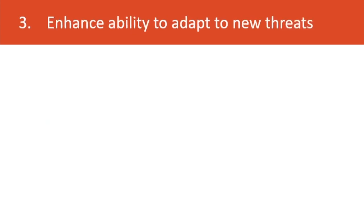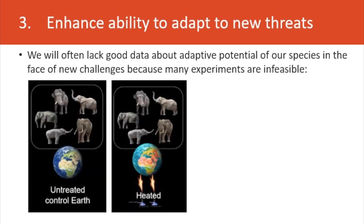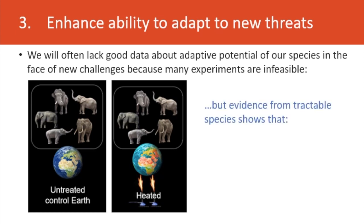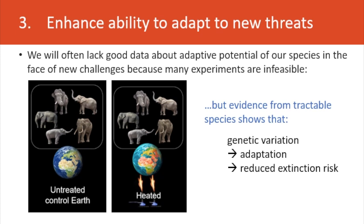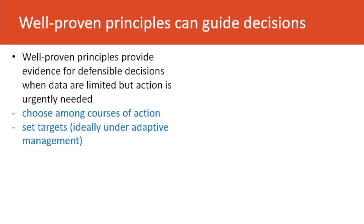We would also like to enhance the ability of small populations to adapt to new threats. We will often lack good data about the adaptive potential of species of conservation concern in the face of new challenges, because many ideal experiments would be infeasible — such as understanding exactly how elephants are going to respond to climate change. Nonetheless, we can get evidence from much more tractable systems, and this information shows that genetic variation increases adaptive potential and can lead to reduced extinction risk.